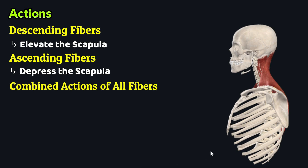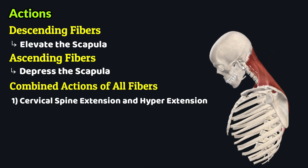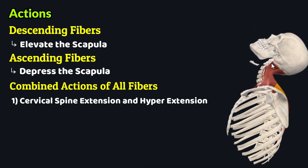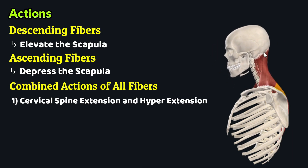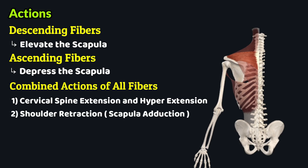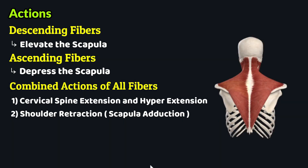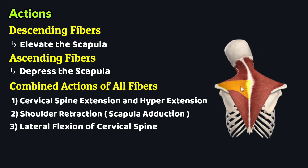The combined actions of the three fiber groups include cervical spine extension and hyperextension — when the trapezius contracts, the cervical spine first extends and then hyperextends. Another important function is shoulder retraction, also known as scapula adduction, where the trapezius draws the scapula posteromedially. The last combined function is lateral flexion of the cervical spine, where contraction of the trapezius laterally flexes the cervical spine, decreasing the angle between the head and the shoulder girdle.